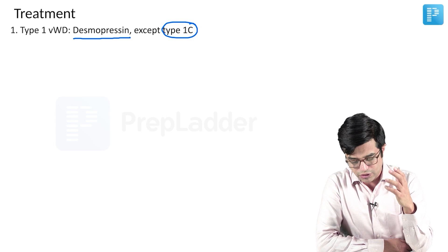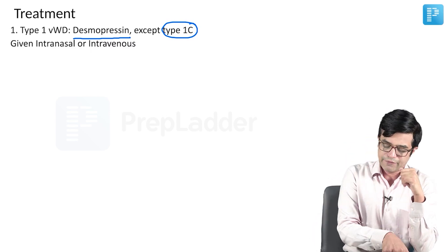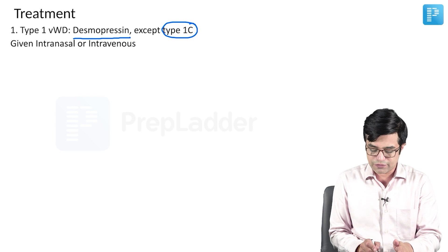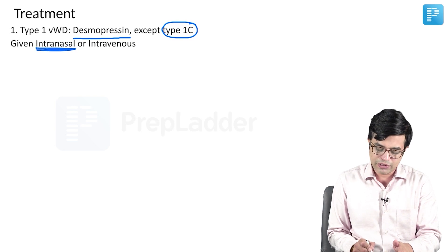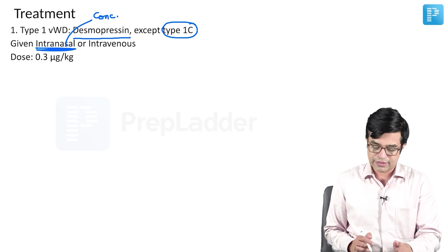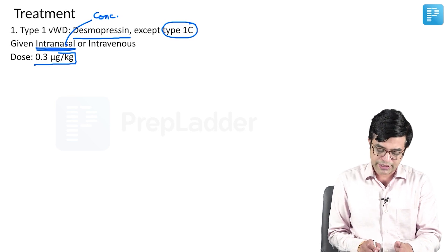Type 1 overall, drug of choice is desmopressin. We can use either the intranasal form or the intravenous form. Intranasal form is usually found to be a concentrated form of desmopressin and the dose is 0.3 microgram per kg.